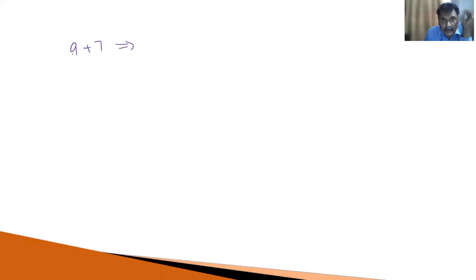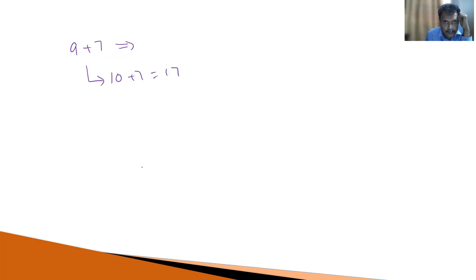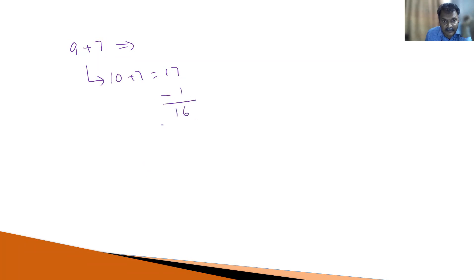Here, you add 1 to this number. What is the next step? You need to subtract 1 from the result. What happened here is, just add 1 to this number. So 10 plus 7 equals 17. What we require? We require the sum of 9 and 7, not 10 and 7. So what we need to do is just subtract 1 from this number. That is equal to 16.